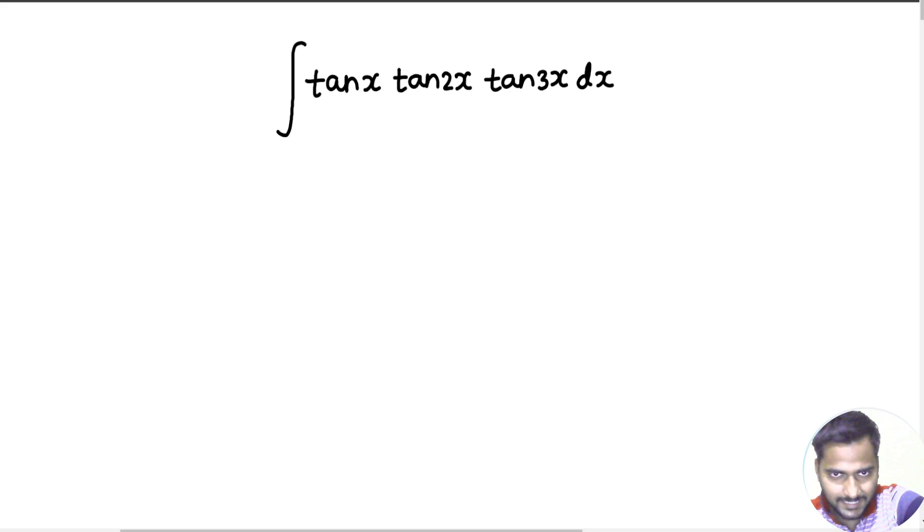So first of all, is there any relation between 3x, 2x and x? Yes, I would say there is one relation and that relation is 2x plus x gives you 3x. Now if you take tan on both sides, you will get tan(2x+x) giving you tan 3x.